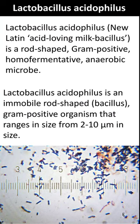Lactobacillus acidophilus is a rod-shaped, gram-positive, homofermentative, anaerobic microbe. It is an immobile rod-shaped, i.e. bacillus, gram-positive organism that ranges in size from 2 to 10 micrometers.